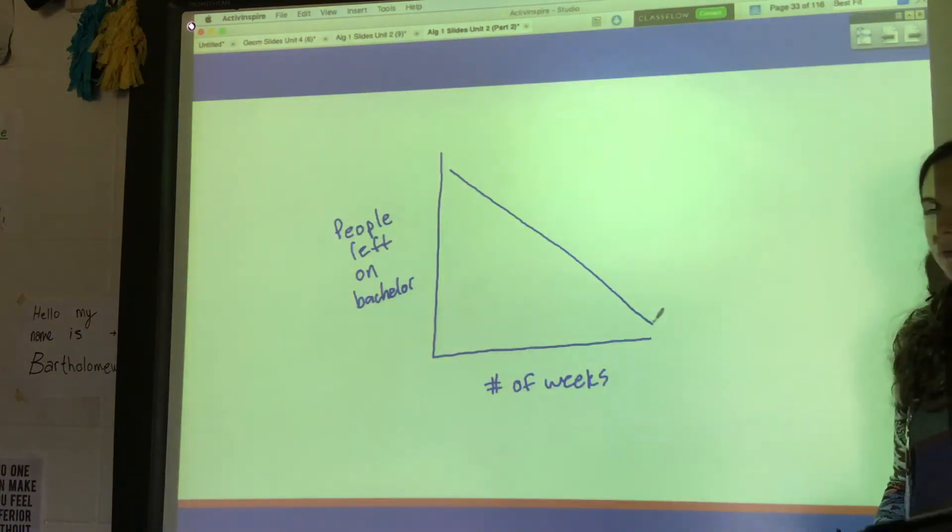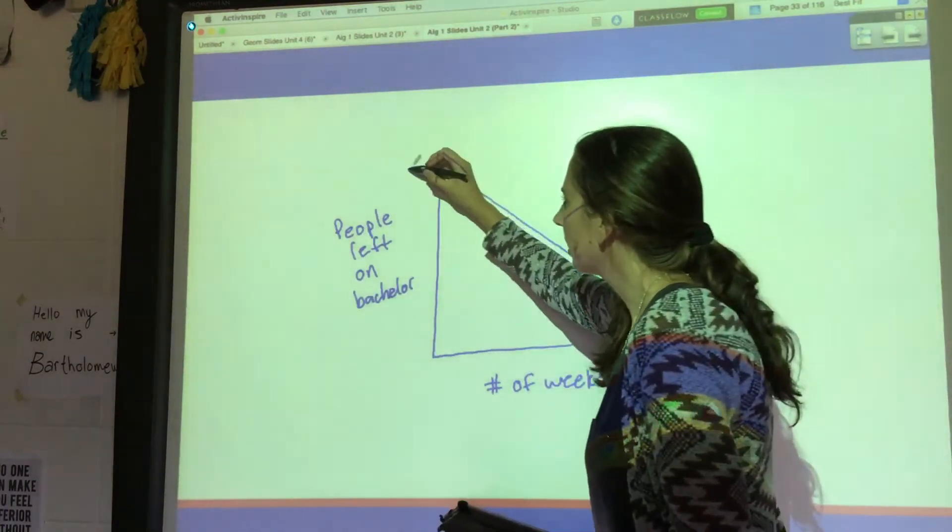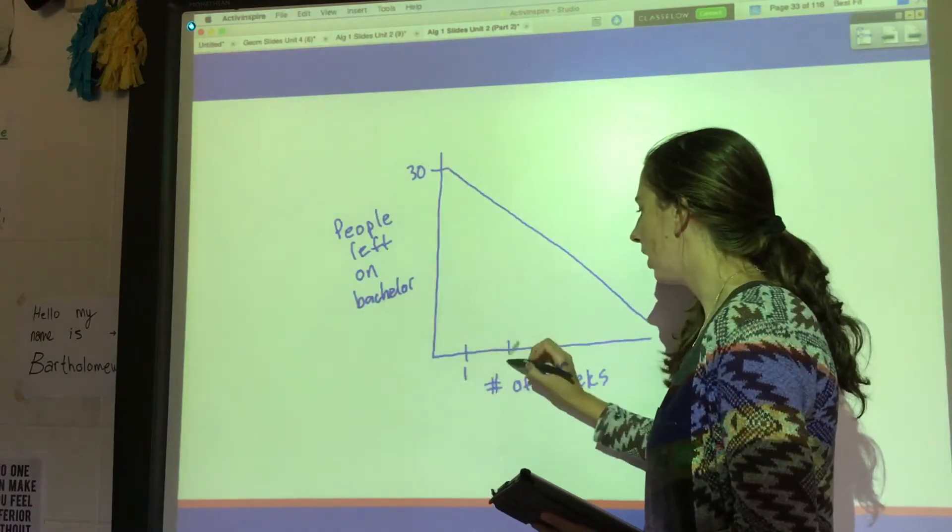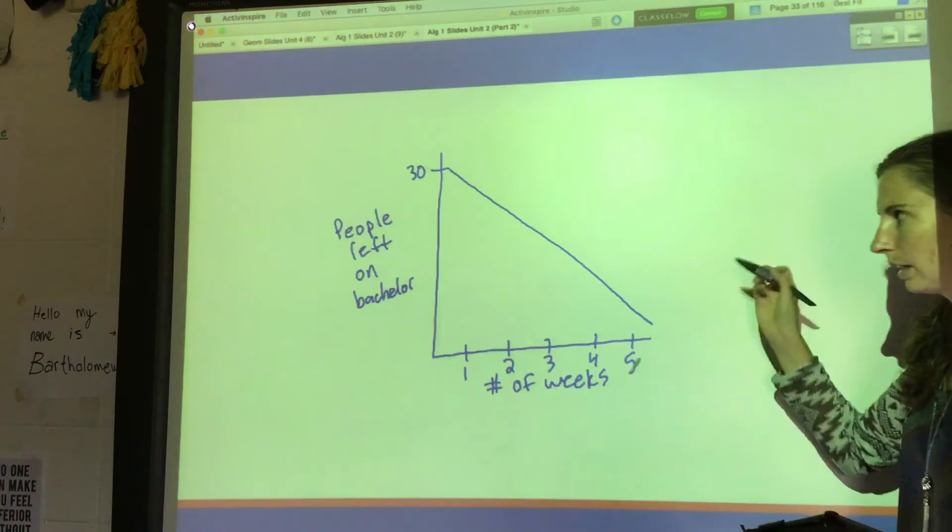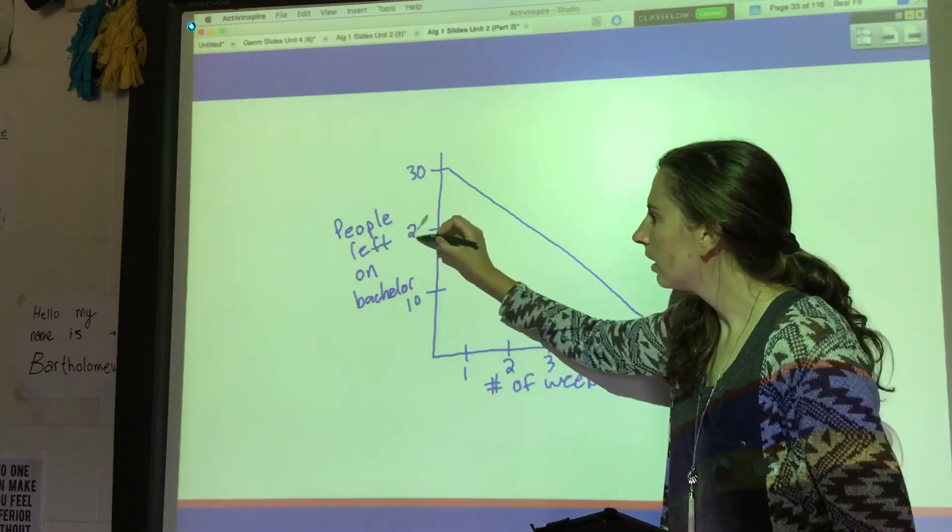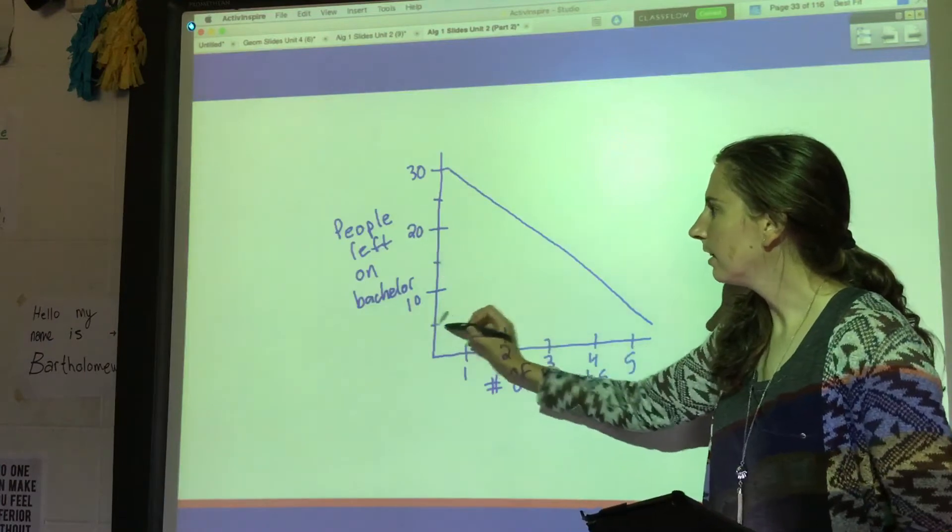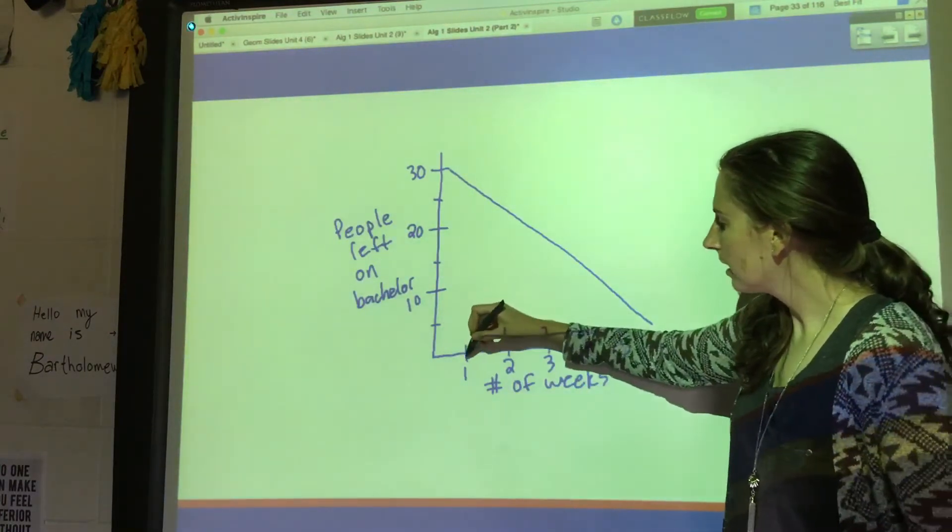Except this graph doesn't actually make a whole lot of sense. Let's say, I don't know that this is accurate, but let's say we start with 30 people and this is week one, week two, week three, week four, week five. This is 10 and 20. Would it make sense for us to have, like let's say at week one we're down to like 25 people,